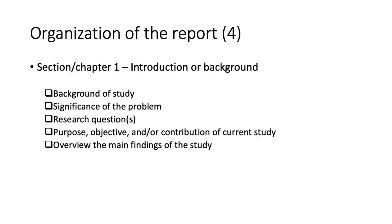After the abstract, we move to chapter one, where you provide an introduction or the background of your social research. You should explain the background or social context of the study, the significance of the problem, and why it is important. You can list your research questions, explain your purpose, objective, or contribution of the current study. Optionally, you can include a review of the main findings of the study.